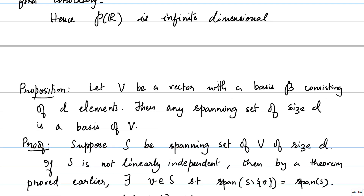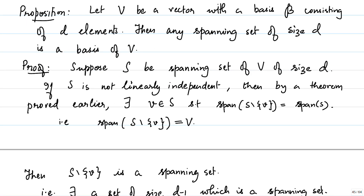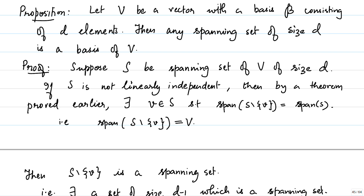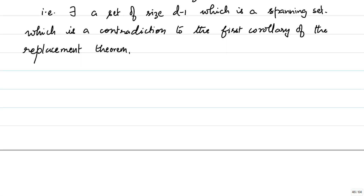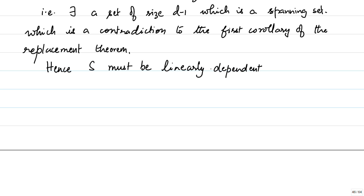Having a spanning set of size D minus 1 is a contradiction to the first corollary of the replacement theorem, which states any spanning set must have size at least D. Therefore our assumption is false, and S has to be linearly independent. But S was a spanning set to begin with, and it is also linearly independent. Therefore S is a basis, and we have proved the proposition.